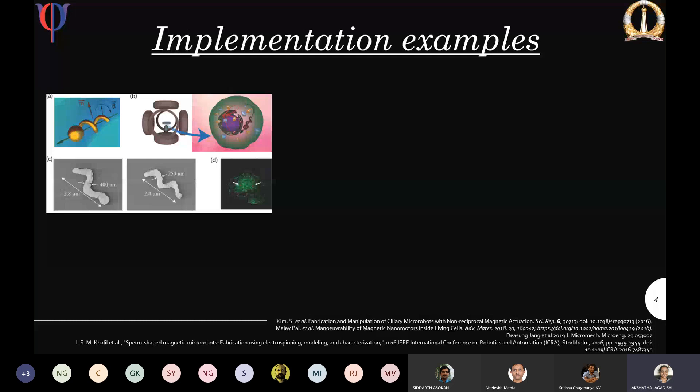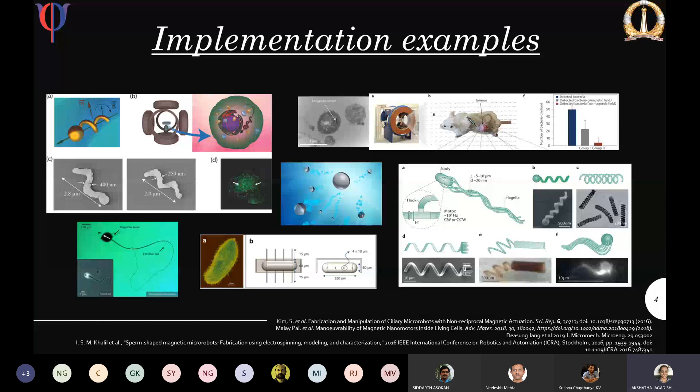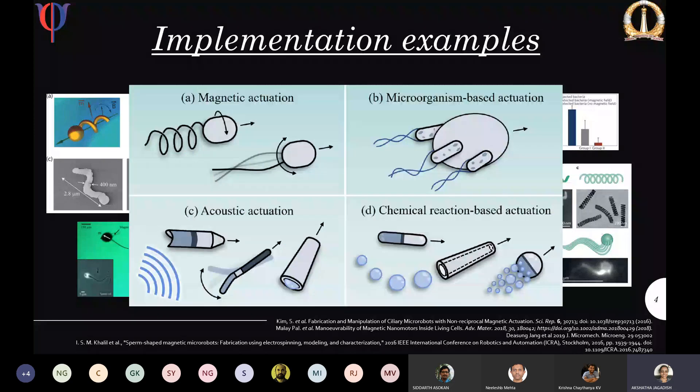All these micro robots can be classified into four categories based on the method of actuation: magnetic field-induced motion, sound-induced motion, micro-organisms used for actuation of passive particles, and chemical reaction-based methods. It should also be mentioned that there are light-induced actuation methods, but light is used to initiate a chemical reaction, so they fall under chemical reaction-based actuation.